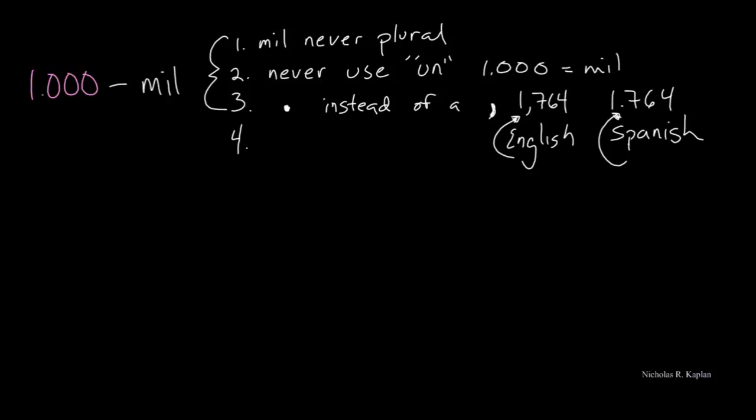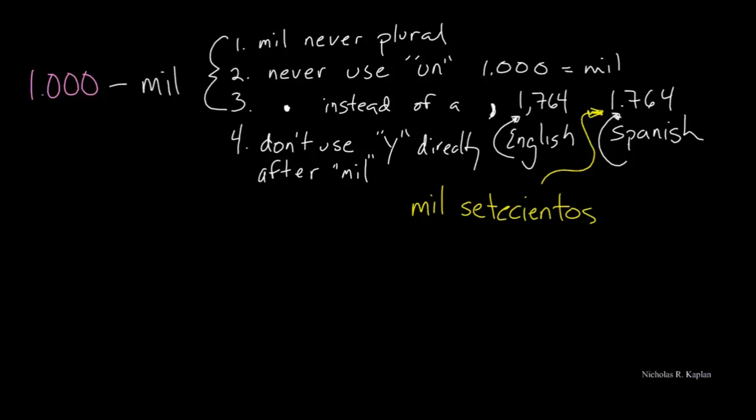The fourth thing - I said there were three, but I guess there were four - we don't use 'and' directly after 'mil'. Let's look at an example. How would I say 1,764? Well, I start with 1,000: 'mil'. And then I have to say 764. And there we go. We have our number: 1,764.